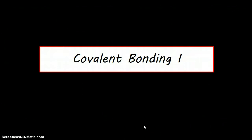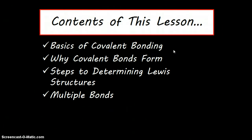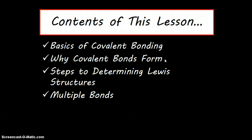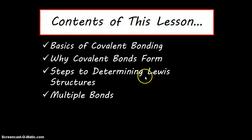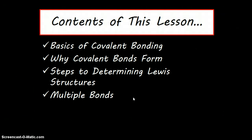Today's lesson is the first in a two-part lesson on covalent bonding. In this lesson, we are going to start off by looking at the basics of covalent bonding and what it means to be covalently bonded. We will show you how and why covalent bonds form, then do some practice on determining Lewis structures — how we form molecular compounds using covalent bonding. Finally, we will look at multiple bond possibilities in order to satisfy the octet rule.